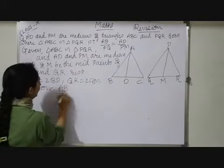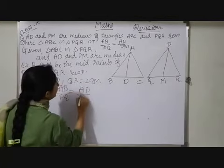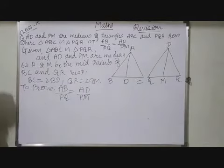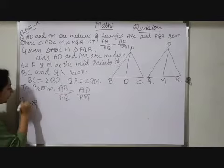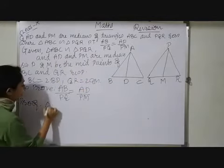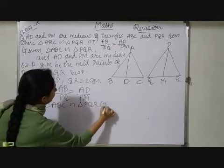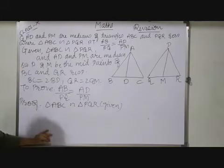And what we have to prove here, AB by PQ is equals to AD upon PM. Now observe, these medians I have to prove equal to its sides. Now what I can do here, first of all, in the question they have given this both triangles are similar. So here I can write triangle ABC similar to triangle PQR, it is given.